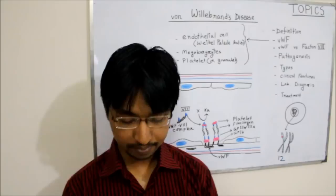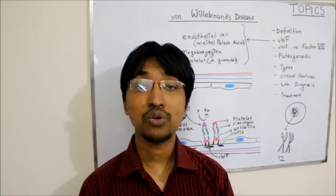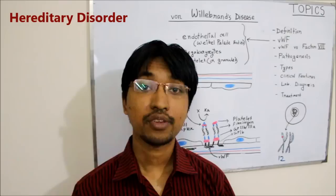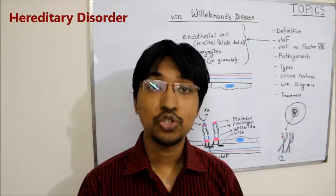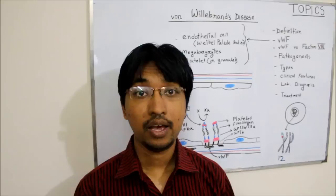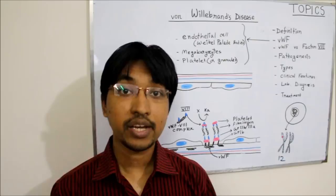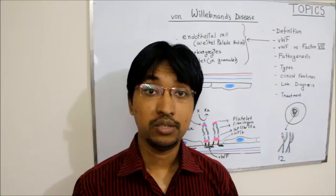Von Willebrand's disease is the most common hereditary coagulation disorder. Hereditary disorder means it is a disease that can be transmitted to offspring from parents via gene. Here we are having a problem in the gene responsible for producing von Willebrand factor. The second part of the definition says it occurs due to qualitative or quantitative deficiency of von Willebrand factor.